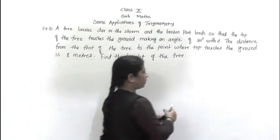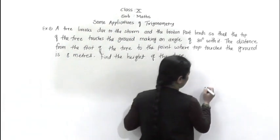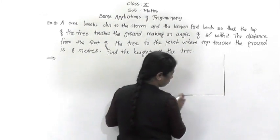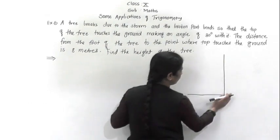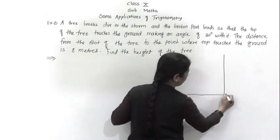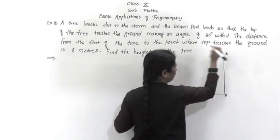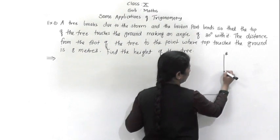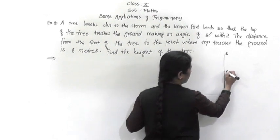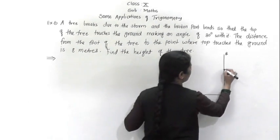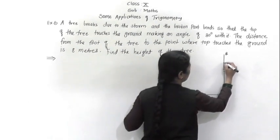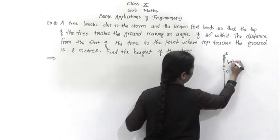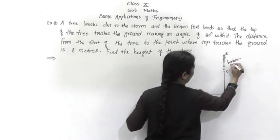So here we will first draw this tree. This is your ground level. Then here point A — A is the total height of your tree. Then due to the storm, the tree breaks here at the point C. This means BC is the broken part of your tree.